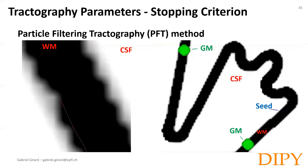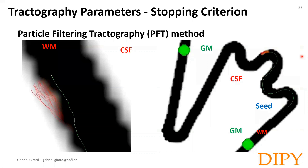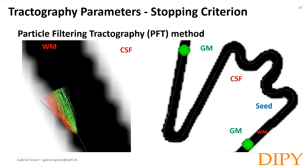In the second example, we have two regions of gray matter and CSF displayed here. You can see this narrow corridor of white matter shown in black. The PFT algorithm deflects the streamline from the CSF voxel, keeping the trajectory in the white matter. It would otherwise be very difficult to find a trajectory in this narrow curved corridor of white matter. But using prior information on where the streamline should and should not stop allows PFT to find a plausible pathway.